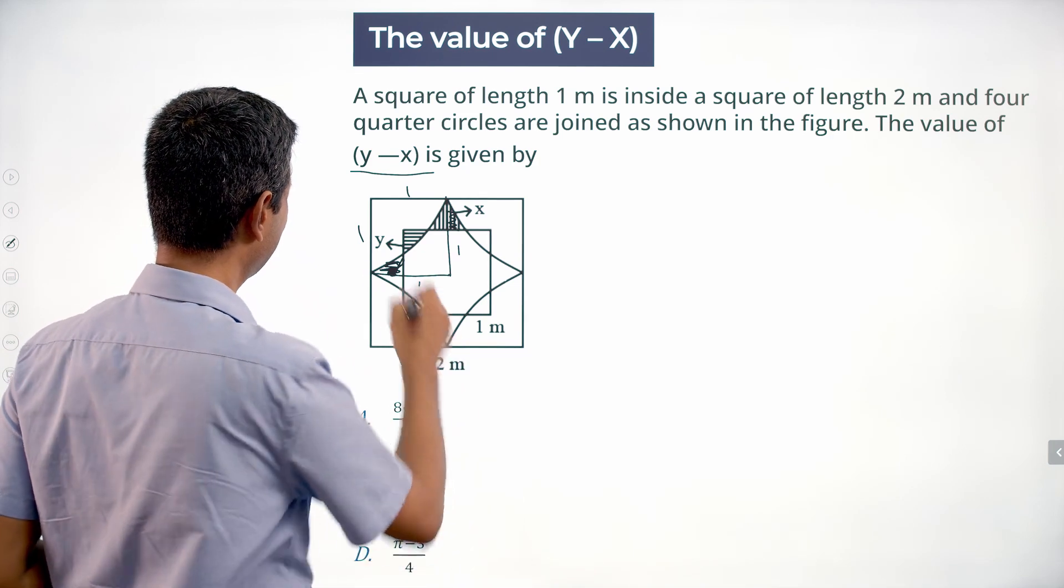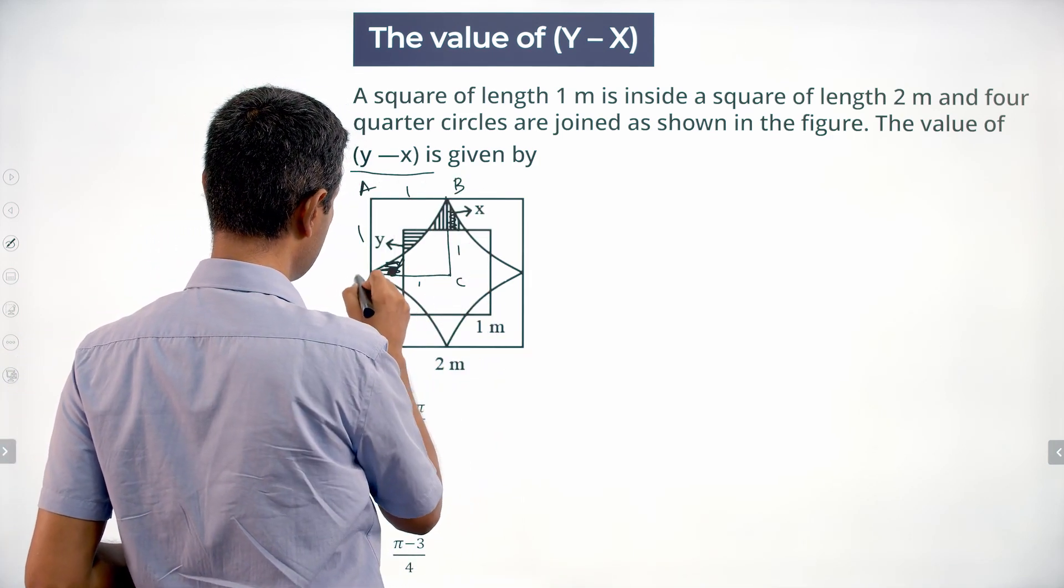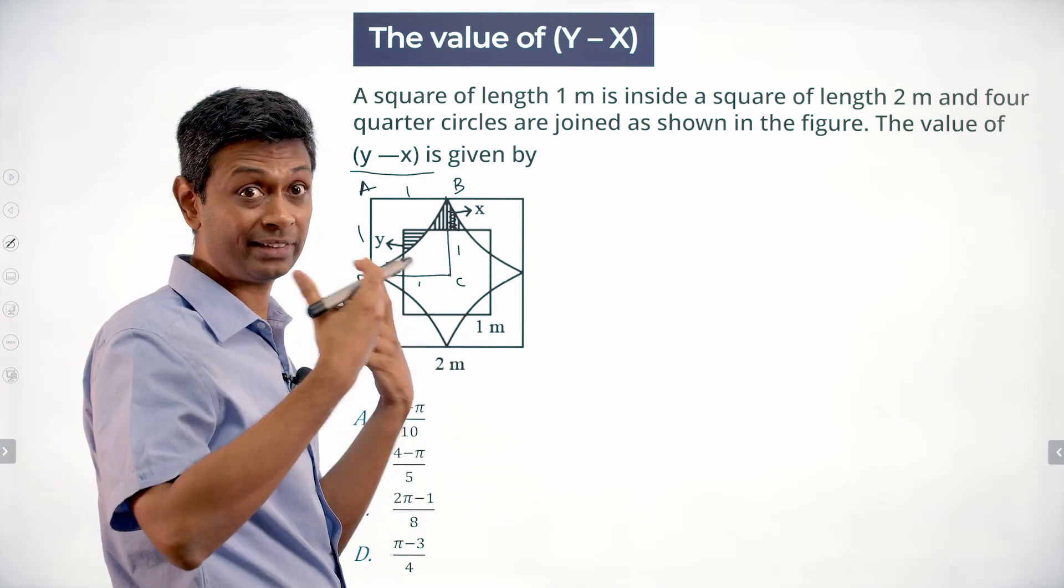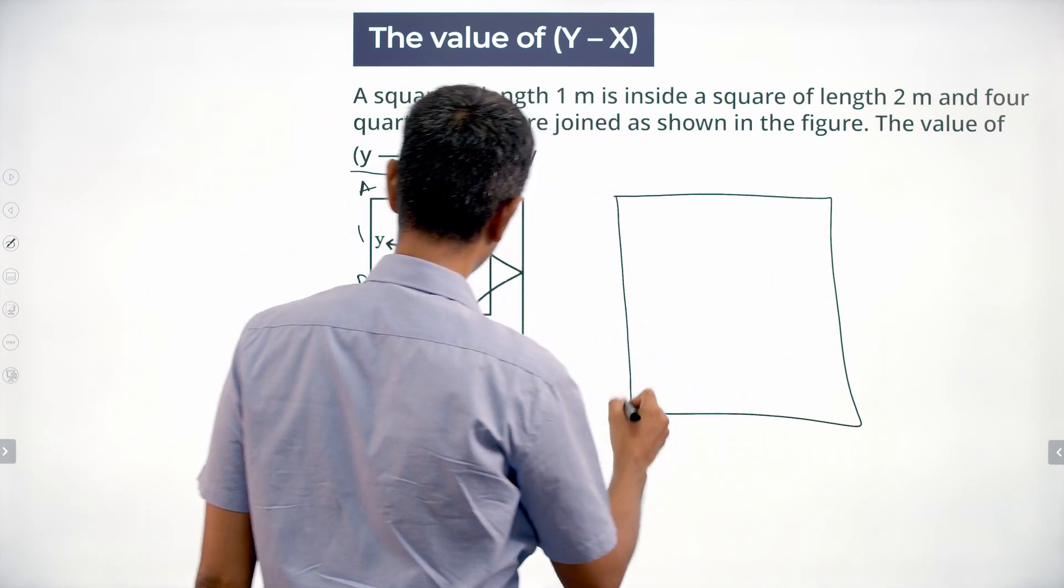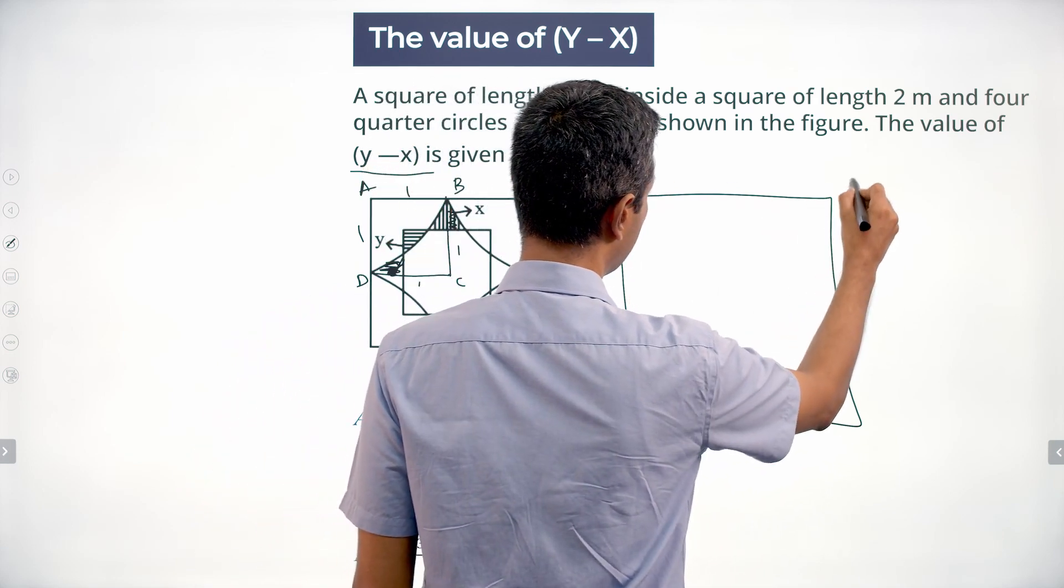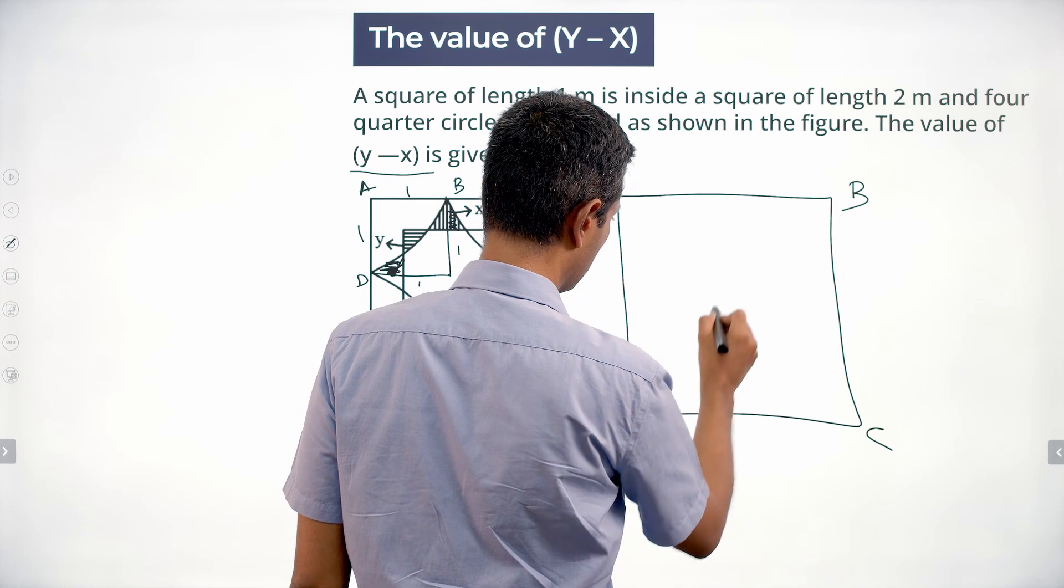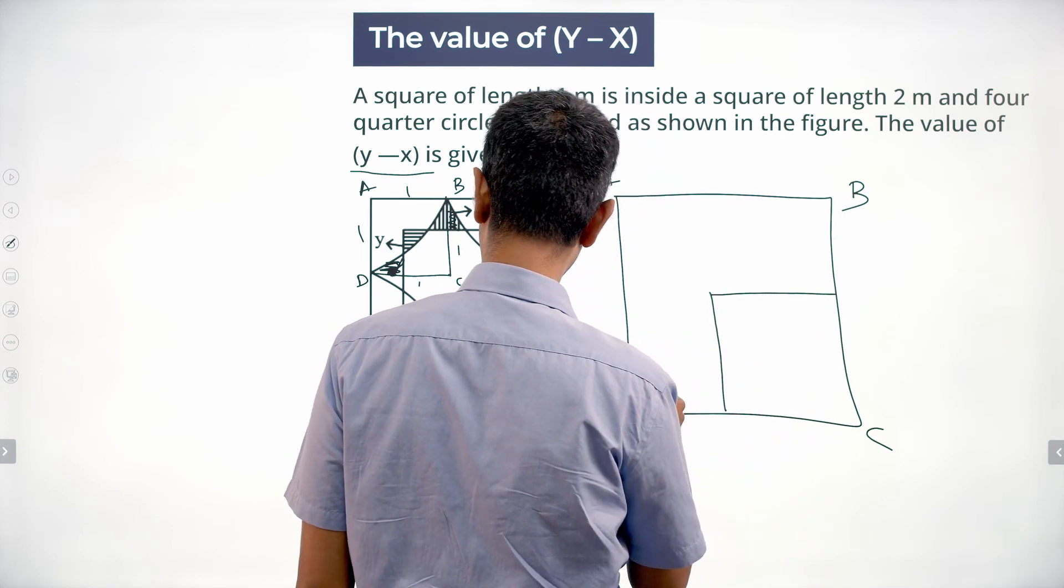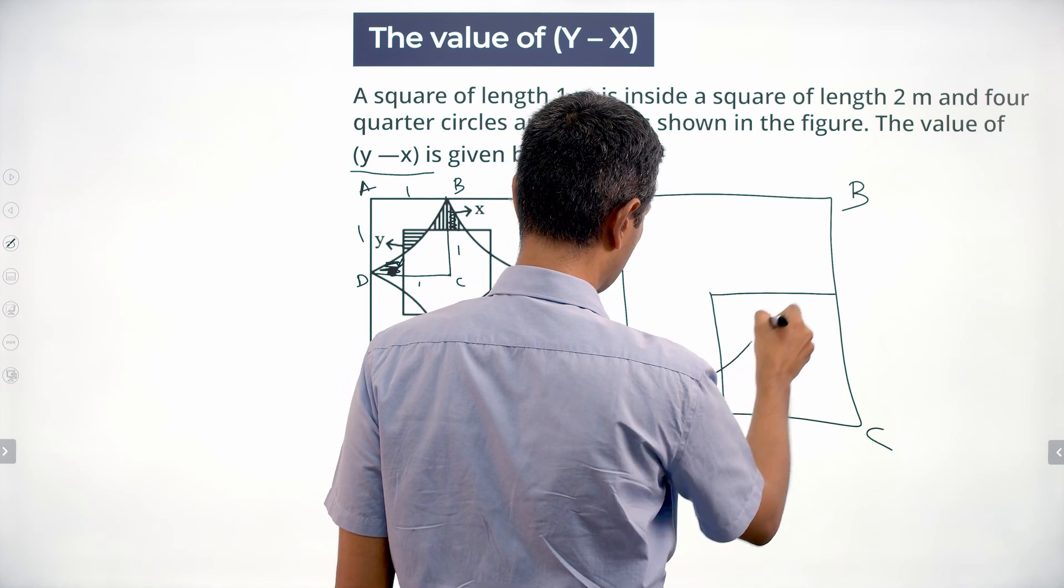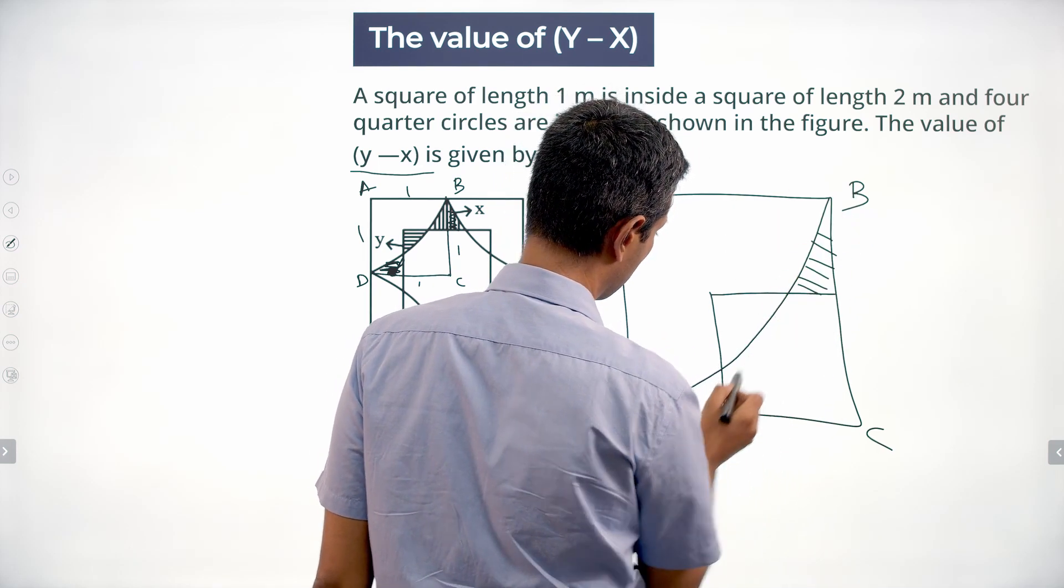I'm going to take this square ABCD and expand that. Let's see how it looks. So I have A, B, C, D, I have this water cut away, and then this arc here.